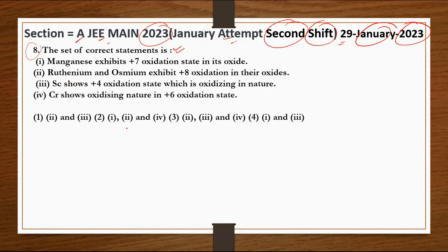सबसे पहला statement है कि Manganese exhibits +7 oxidation state in its oxide। तीन statements हैं। देखो, सभी ने सुना होगा Mn2O7 के बारे में जहां पर manganese की जो oxidation state आ रहे हो गया है +7 और ये एक oxide है, ठीक है।